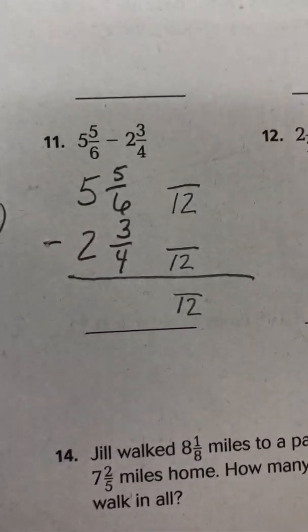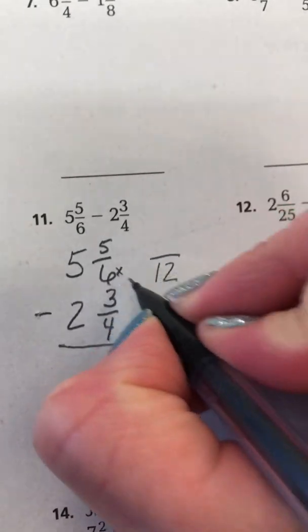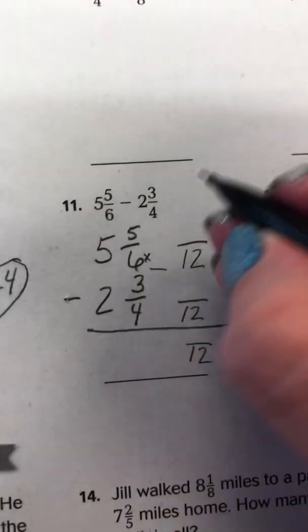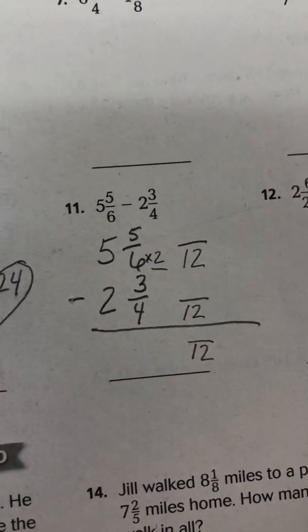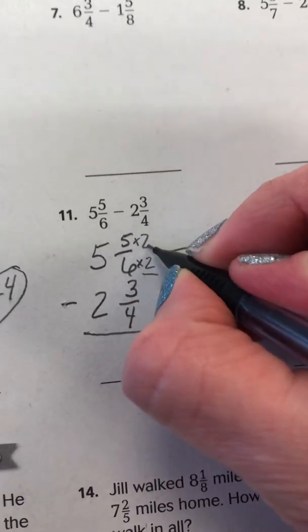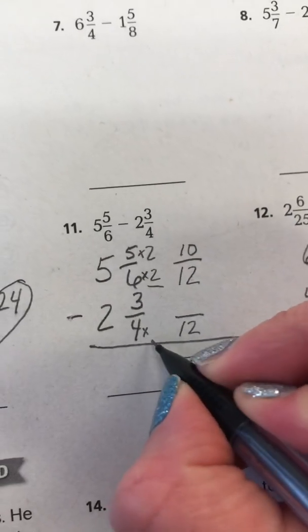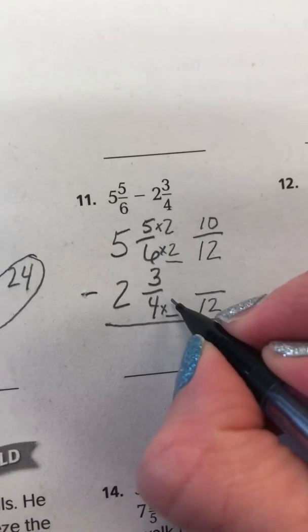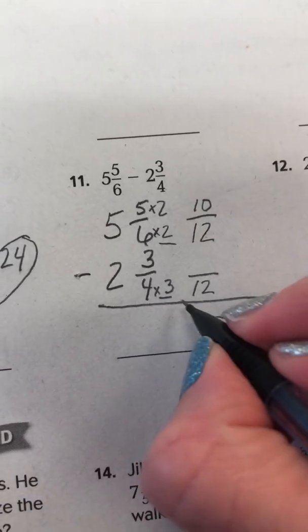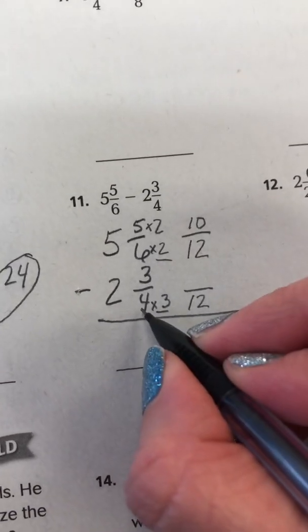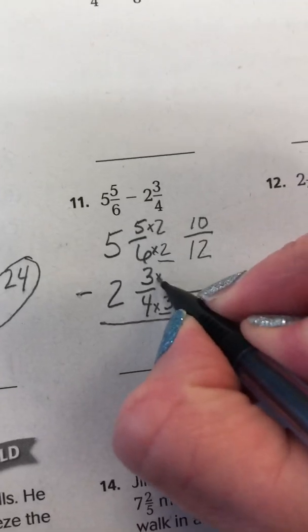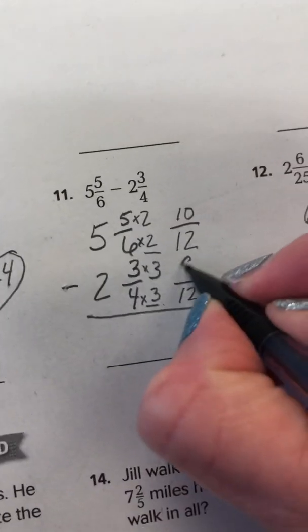Now let's make our new fractions. What did we multiply 6 by to get 12? 6 times 2 is 12. So whatever you do at the bottom, you have to do at the top. So 5 times 2 is 10. And what did we multiply 4 by to get 12? We multiplied it by 3. 4 times 3 is 12. So since we multiplied the bottom by 3, we have to multiply the top by 3. 3 times 3 is 9.